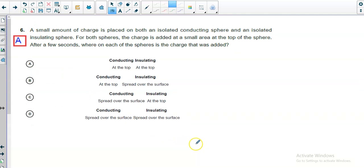A small amount of charge is placed on both an isolated conducting sphere and an isolated insulating sphere. The charge is added to a small area at the top of the sphere. After a few seconds, where on each sphere is the charge? You should know two things. For a conducting object, the charge will always spread out evenly on the outside surface, because the excess charge will repel each other. On an insulator, charge stays wherever you put it because it can't move.